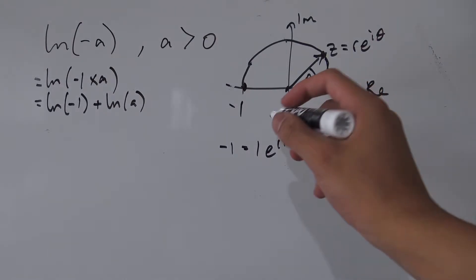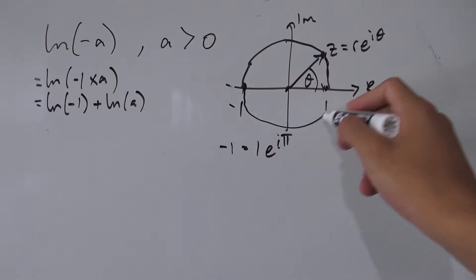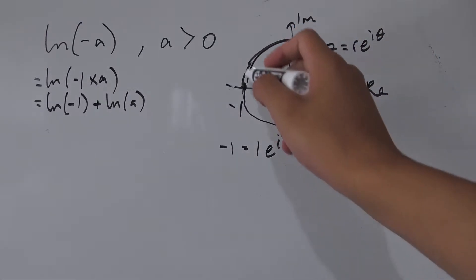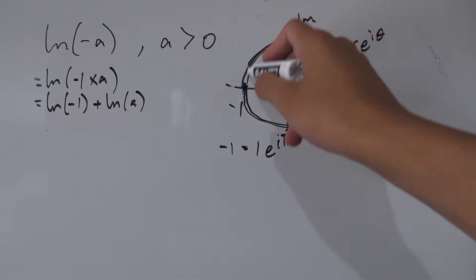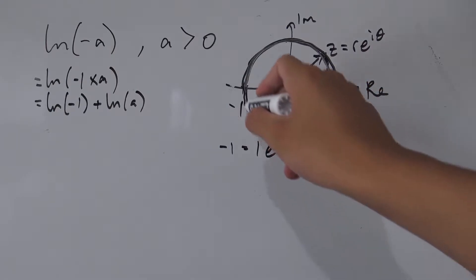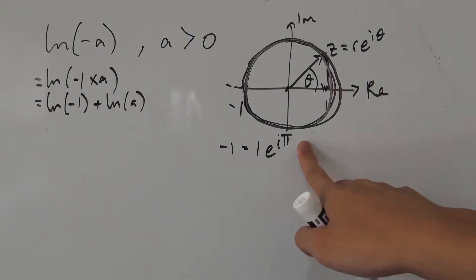But we're actually not done yet, because how about if we go around another time? We're still going to land on negative one. And if we go around another time, we're still going to land on negative one. And even if we go backwards, we're still going to land on negative one. So we're actually missing something in this angle here.